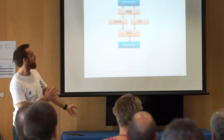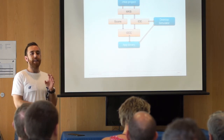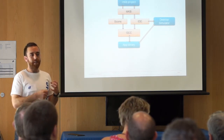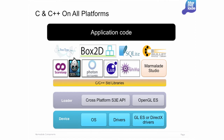The toolset: you've got an MKB project, and Scons is the command-line toolchain. You have an IDE — Visual Studio or Xcode — that gets pushed into your compiler like GCC to build an app binary. We've got a desktop simulator, so you can push straight into that and debug through it. Or your app binary can be thought of as a package you've built up that you can then deploy to any platform, or run in a simulator. The deploy tool takes your loader, packages that with the binary, and gives you an app. This is basically where the platform abstraction works.